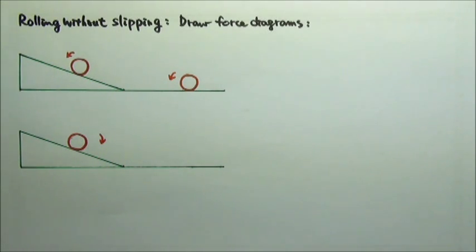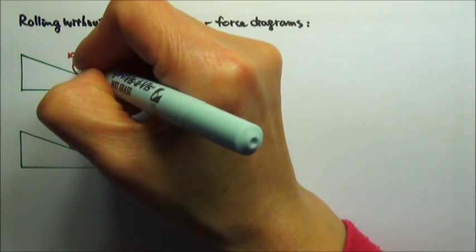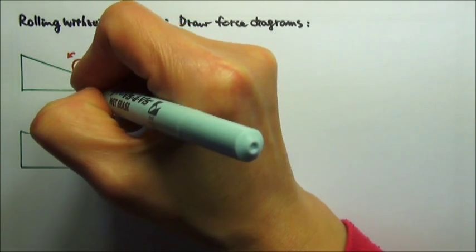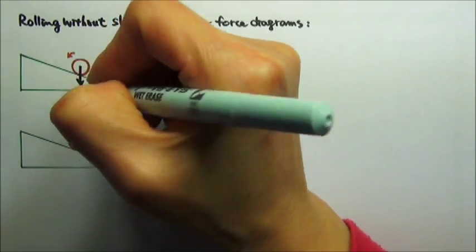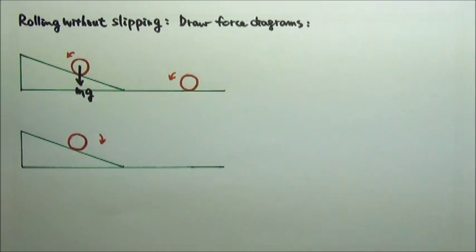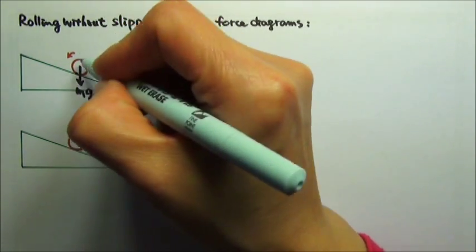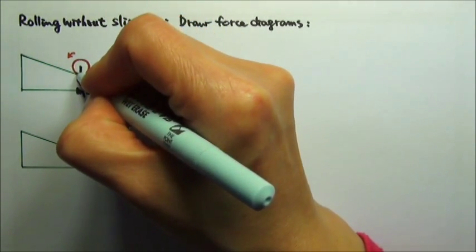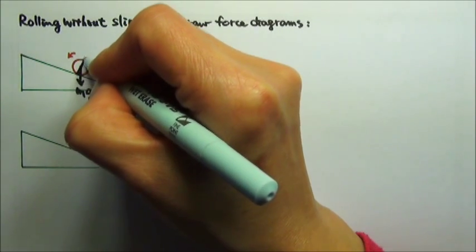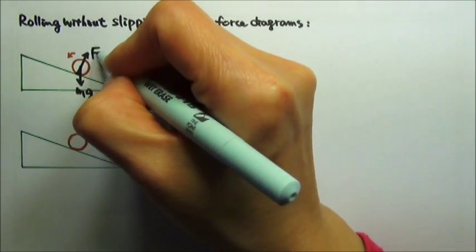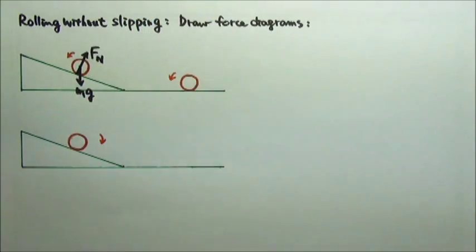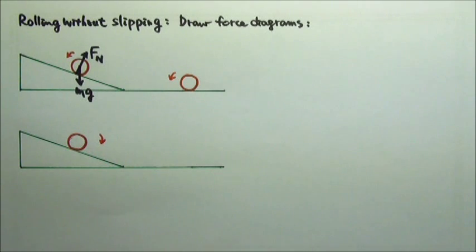There is gravitational force acting on the sphere — we would draw mg from the center of mass. There is normal force from the contact point, so we would draw normal force from where the sphere touches the incline, right there. That's the normal force, perpendicular to the incline. What about friction?